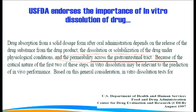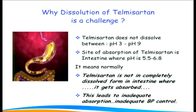As far as telmisartan is concerned, it has been observed that telmisartan, being such an effective blood pressure-lowering agent, has challenges in passing the pH barrier in aqueous solution or in the intestine. It has been found that telmisartan does not dissolve between the pH range of 3.3 to 9, and unfortunately, the site of absorption in the intestine is where the pH is 5.5 to 6.8.